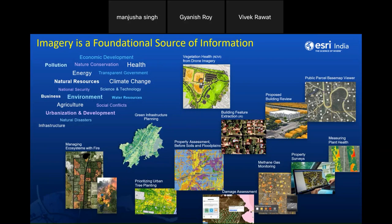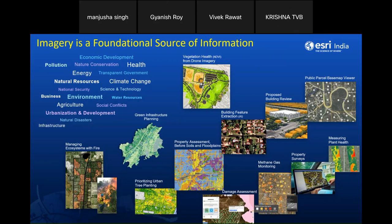Imagery also supports wildlife animal conservation and road management. Recently, drone and high-resolution satellite imagery has proven vital for damage assessment due to disasters, agriculture monitoring, and crop insurance. Methane gas monitoring, plant health measurements, and various indices like NDVI to understand crop health over seasons are also areas where imagery is used extensively. High-resolution imagery can help build footprints to aid parcel change detection and road track detection using AI, ML, and deep learning methods.